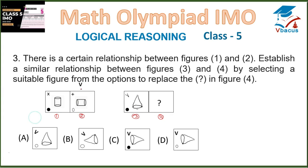Question 3. There is a certain relationship between figures 1 and 2. Establish a similar relationship between figures 3 and 4 by selecting a suitable figure from the options to replace the question mark in figure 4. In figure 1, there is a cross, one cylinder, and one dot filled with black color.